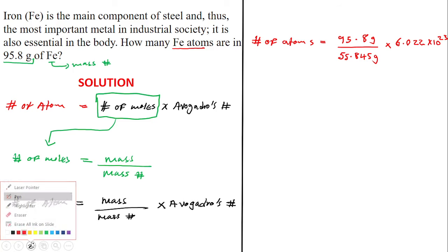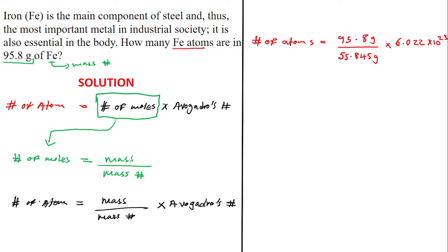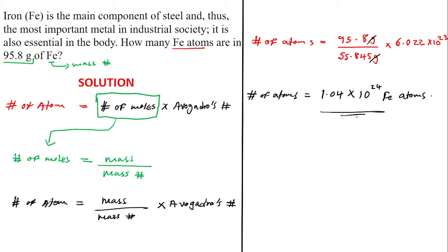When you plug that into your calculator, the grams cancel out and the moles cancel out. The number of Fe atoms is equal to approximately 1.03 × 10²⁴ atoms of Fe.